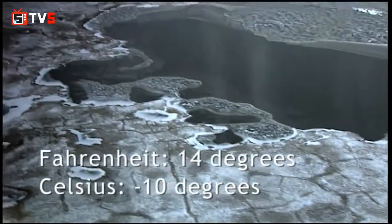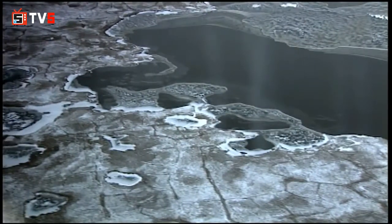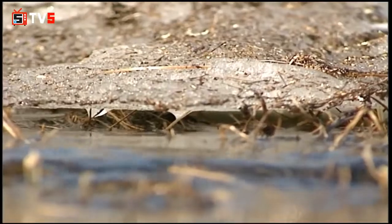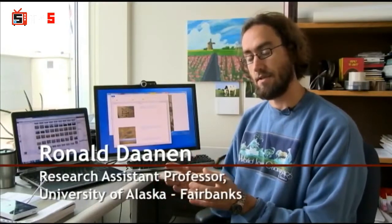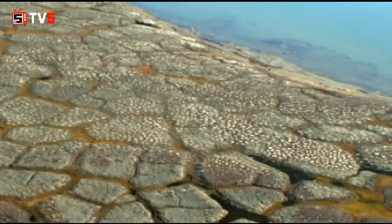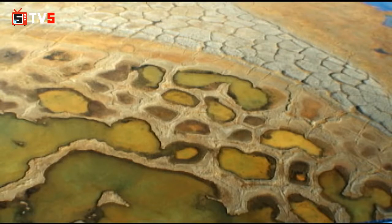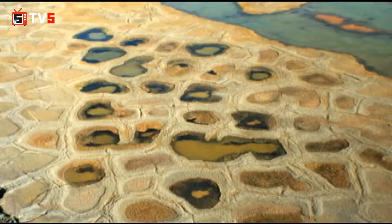These cracks stay slightly open until spring snowmelt. The water from the snow runs into those cracks and then freezes right there, and it slightly expands. The expanding causes the soils to be pushed away. So every year the crack goes roughly in the same place and more water comes in, and so slowly the ice wedge becomes bigger and bigger.